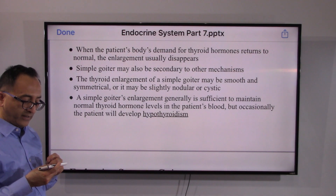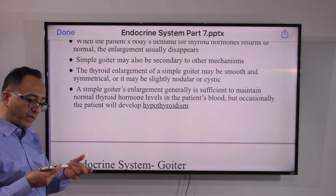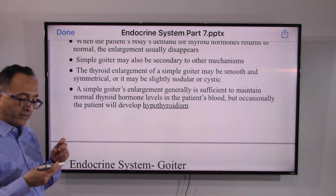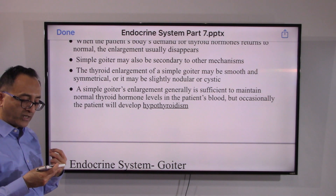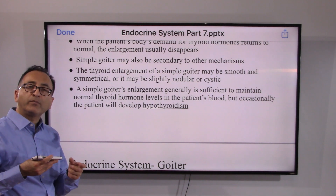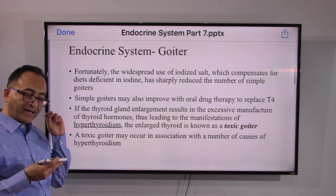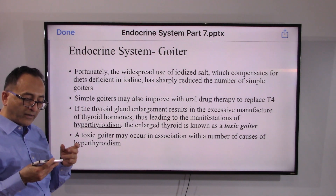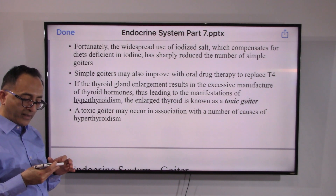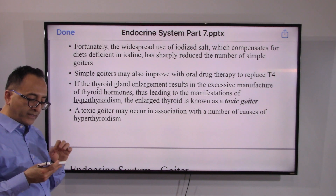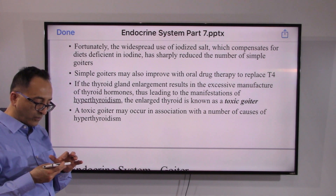Sometimes there is overlap, so the simple goiter's enlargement is sufficient to maintain normal thyroid hormone levels in the patient's blood, but occasionally it may develop into hypothyroidism. Iodized salt can be taken and it generally works. T4 replacement is the best source of drug therapy to control simple goiters.